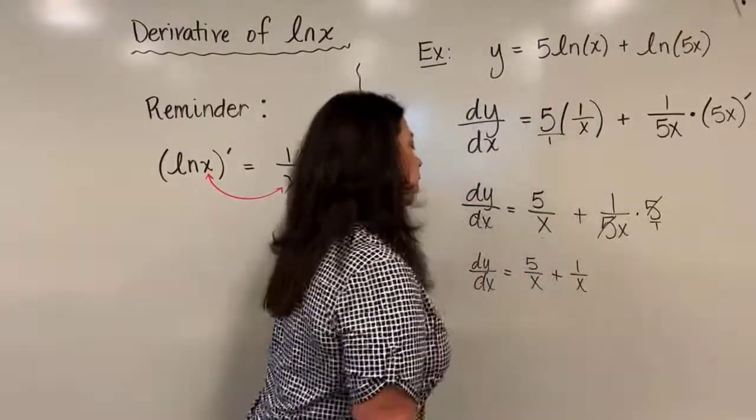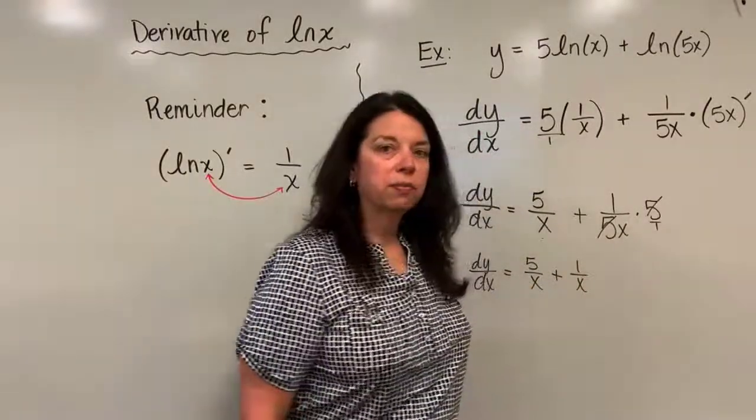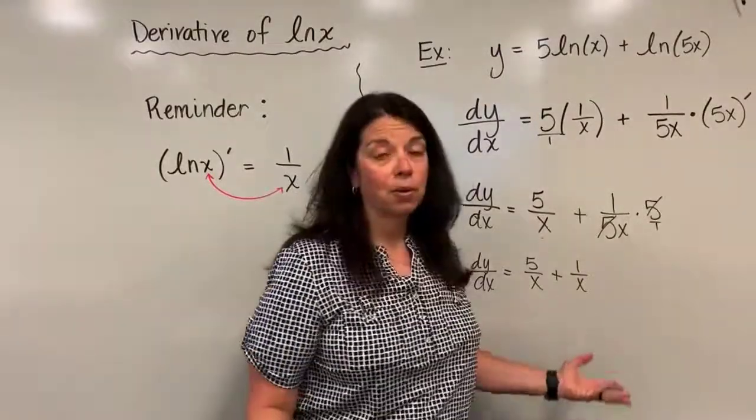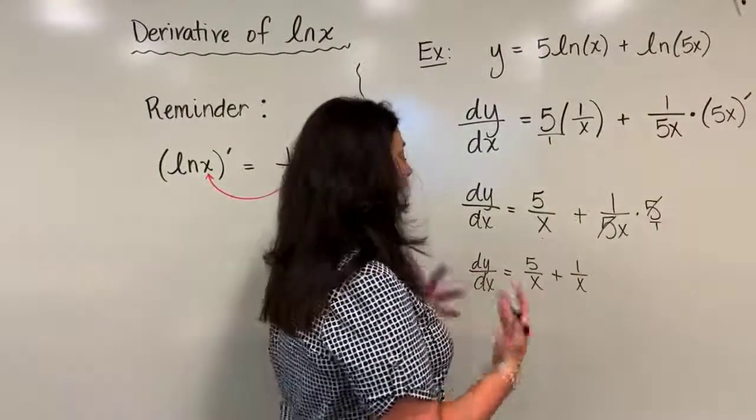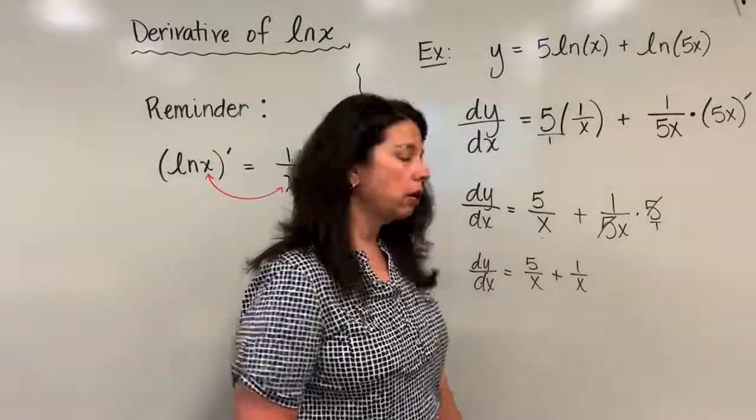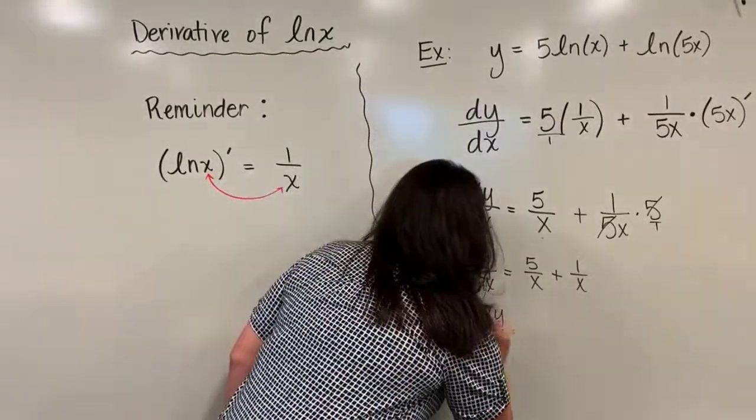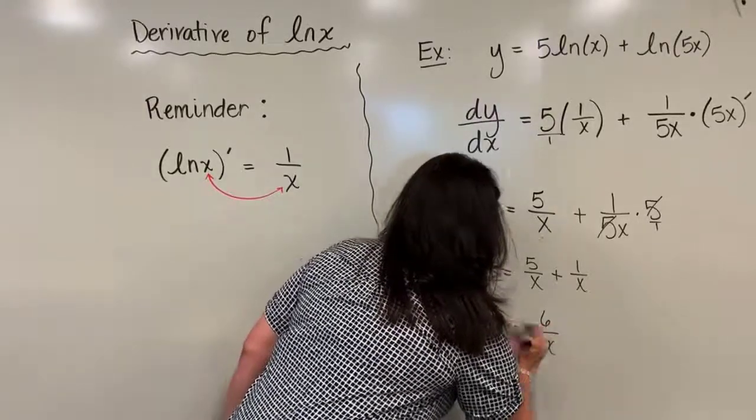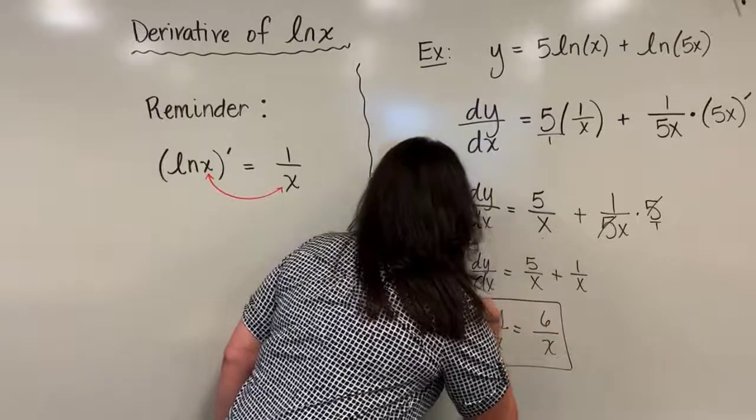I can now go ahead and add those two fractions together to have my final result of dy over dx equal to 6 over x. And there is my derivative for this original function of y equals 5 natural log x plus natural log 5x.